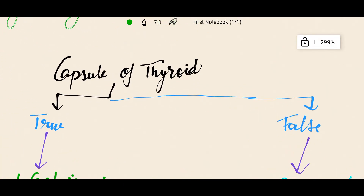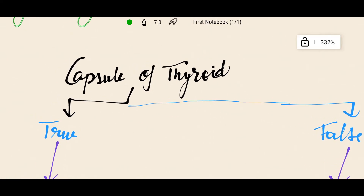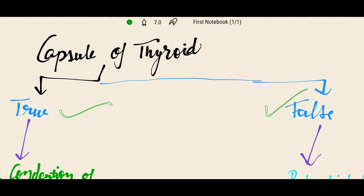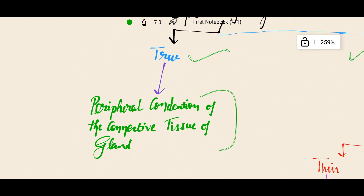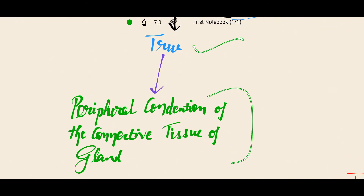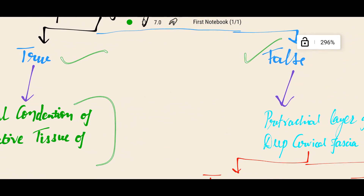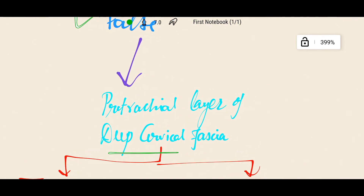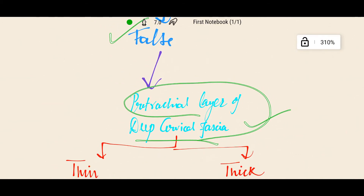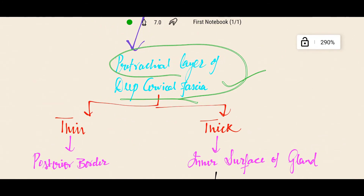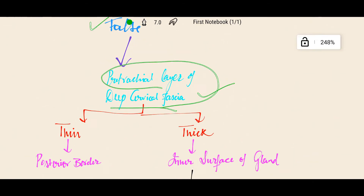The thyroid capsule is of two types: the true capsule and the false capsule. The true capsule is the peripheral condensation of the connective tissue of the gland. The false capsule is the pretracheal layer of the deep cervical fascia.